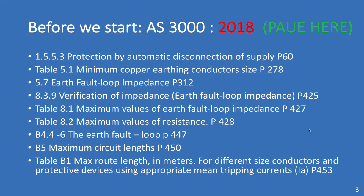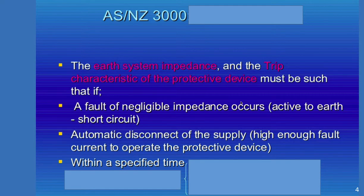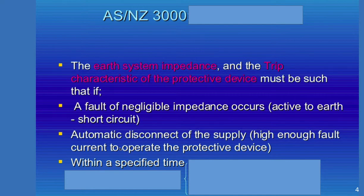Having read the standard, the key introduction is this: the earth system impedance and the trip characteristic of its protective device must be such that when a fault of negligible impedance occurs — an active-to-earth short circuit — automatic disconnection of the supply happens with a fault current high enough to operate the protective device within a specific amount of time. A circuit breaker or protective device must draw enough current to do its job. We'll be looking at circuit breaker tripping current curves and explaining how they work.